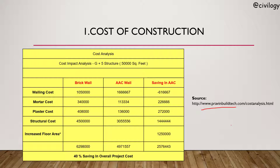Cost of construction: this data is taken from the website traveenbuildtech.com. As shown in the table, the volume cost is more for AAC blocks, but mortar cost, plaster cost, and structural cost will be less. Overall, 40% will be saved in total project cost — making AAC blocks a good deal for large houses or big structures, as shown for a G+5 structure.